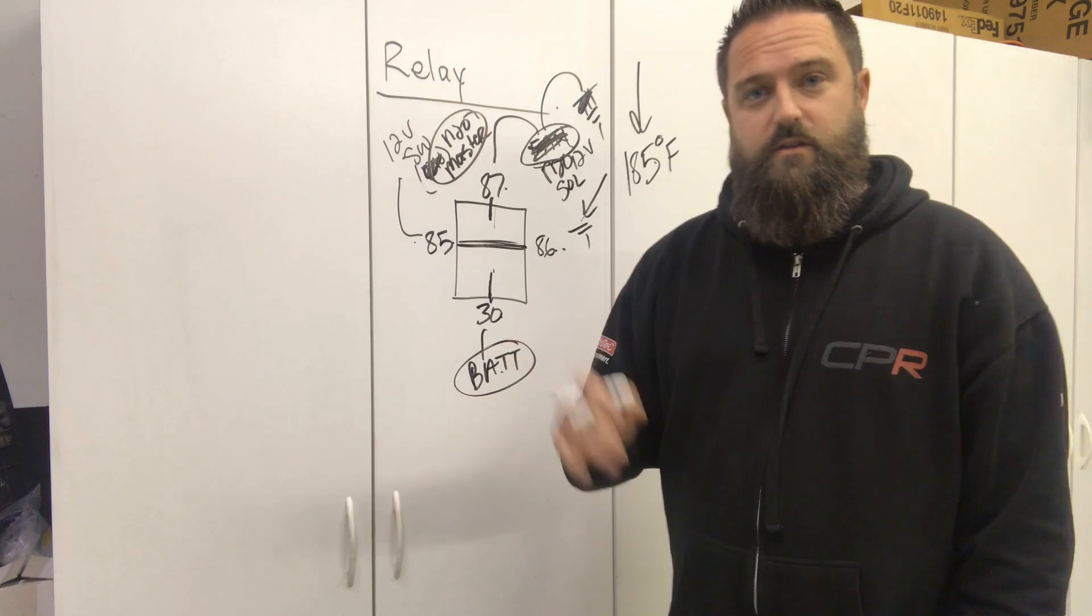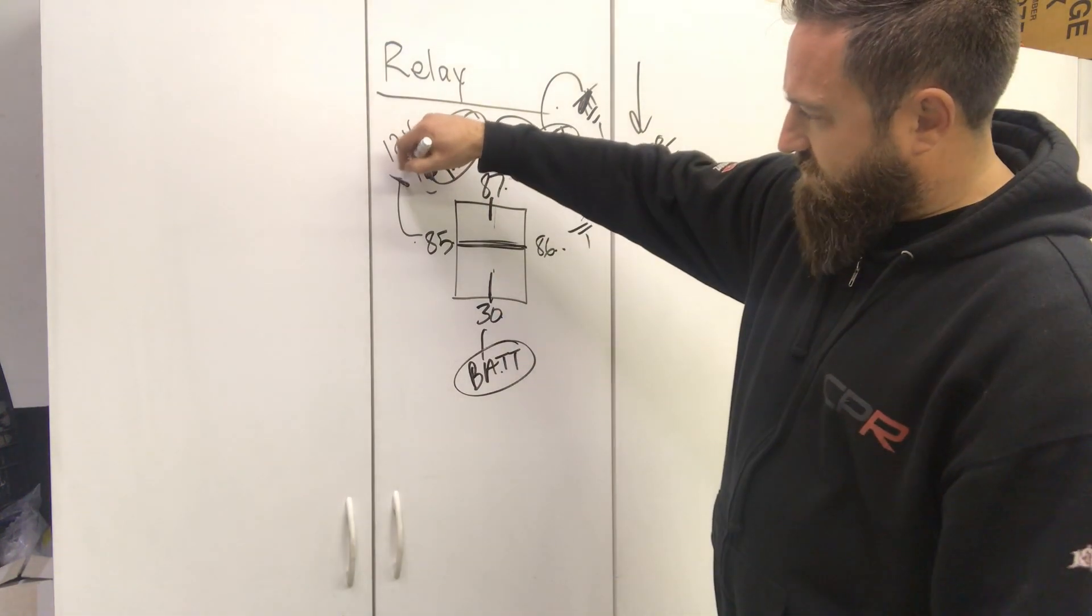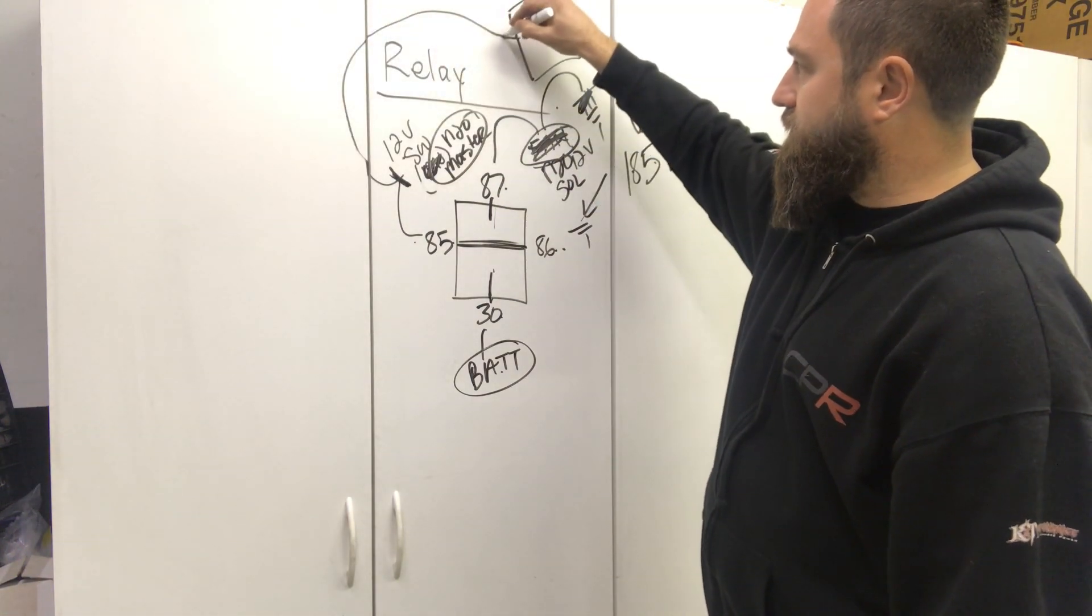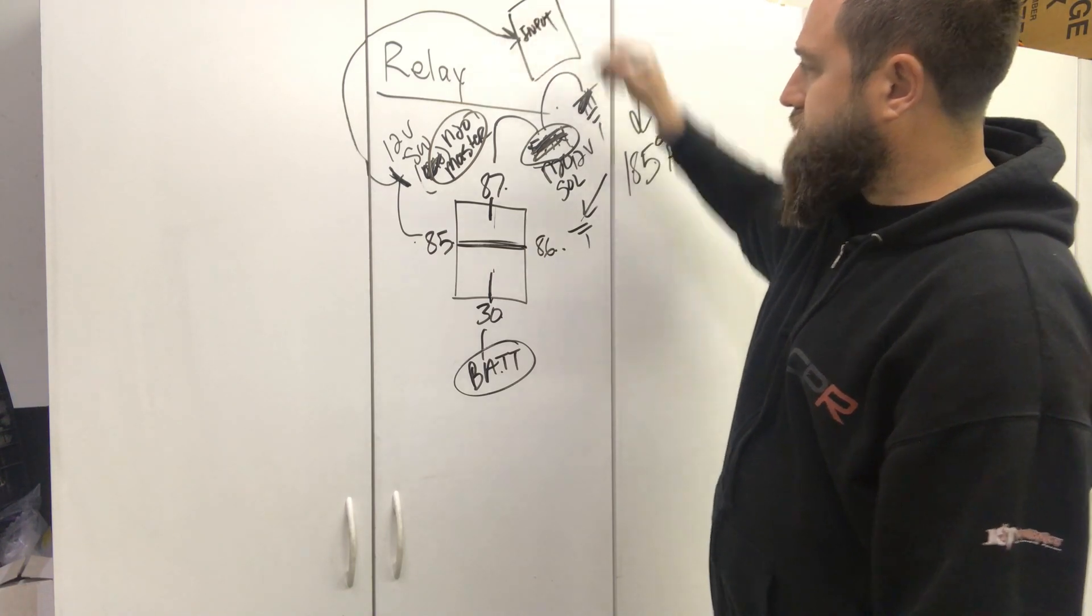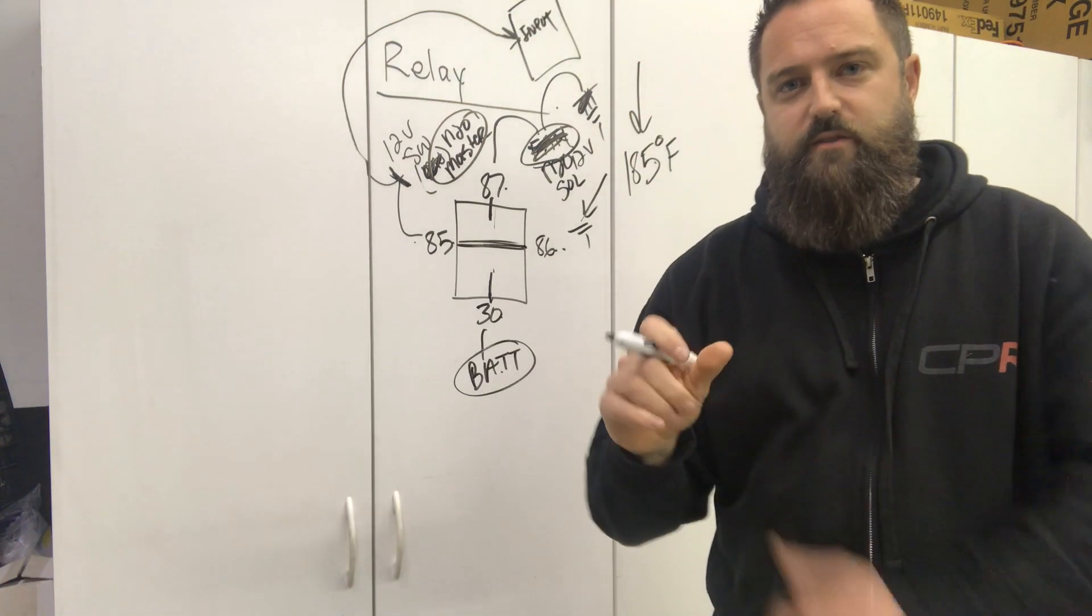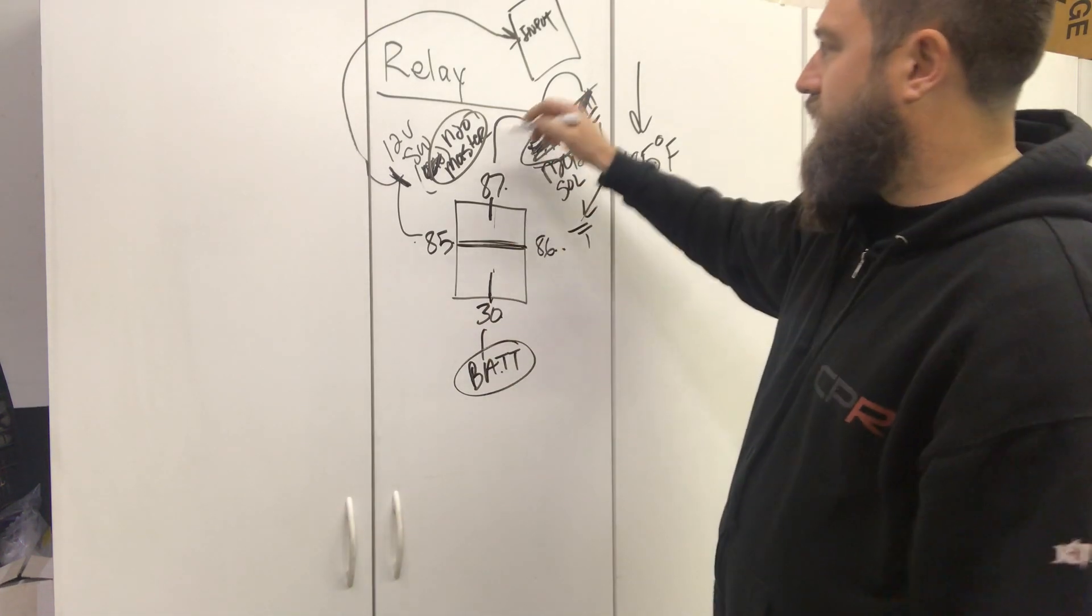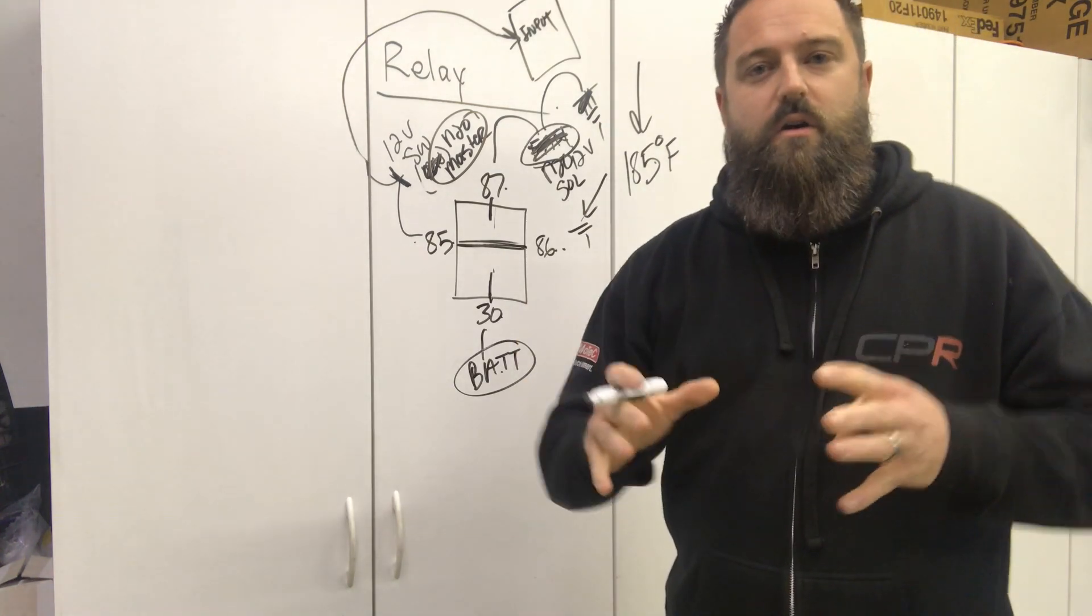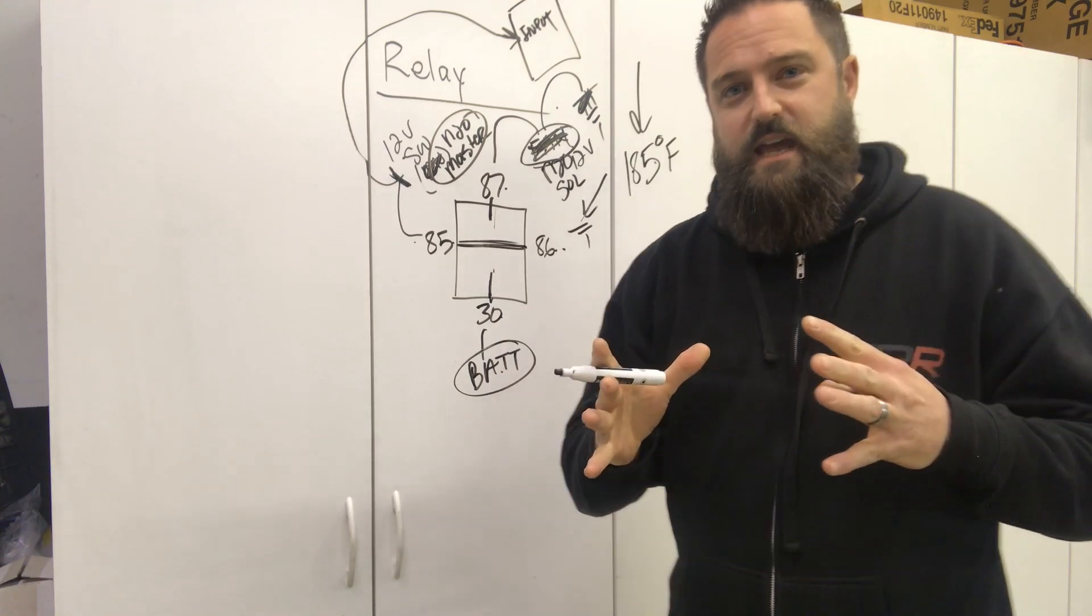The other thing you can do with the MoTeC is take this master arm signal and pin it into the ECU on an input. Part of the software is going to want to see that master arm switch getting activated, and it's going to say, okay, the switch is on.